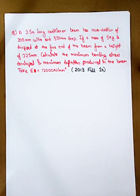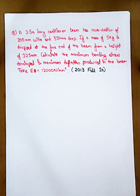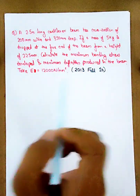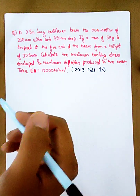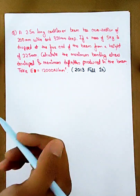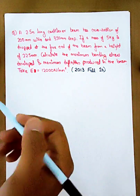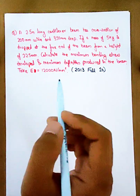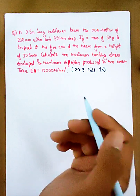This is question number 1 from chapter 2, 2013 fall exam. A 2.5 meter long cantilever beam has a cross-sectional area of 200mm width and 350mm depth. If a mass of 5 kg is dropped at the free end of the beam from a height of 225mm, calculate the maximum bending stress developed and the maximum deflection produced in the beam. Take E equals 12,000 N per mm².